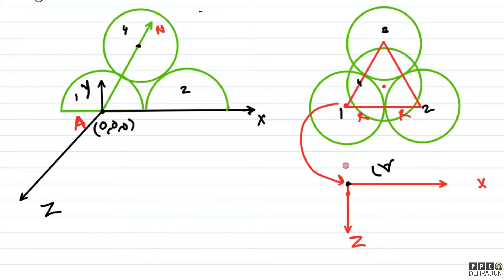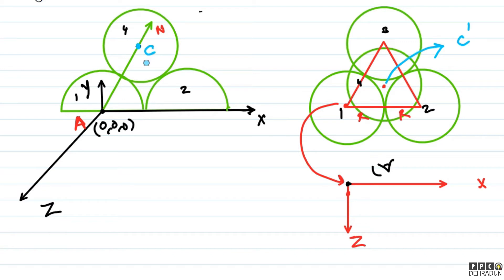The distance between the centers of any two hemispheres is equal to 2R, forming an equilateral triangle. The centroid of this equilateral triangle, which I call C', is a point on the table surface. So C' is the point where the centroid of the triangle formed by hemisphere centers sits on the table.